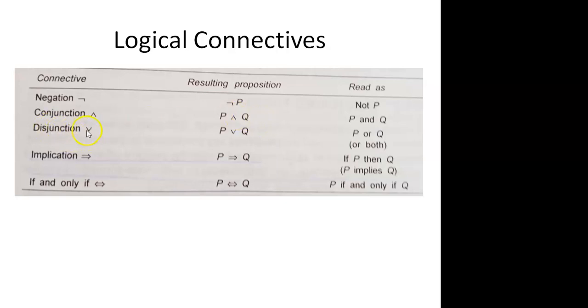Then we have disjunction or OR operation. Disjunction stands for OR, that means either P or Q or both are true, then it will give an answer of 1, otherwise it will be 0.